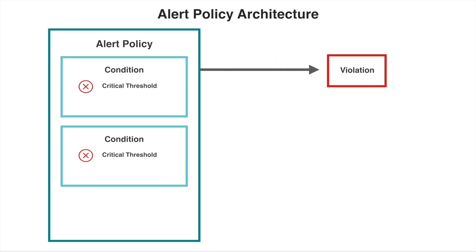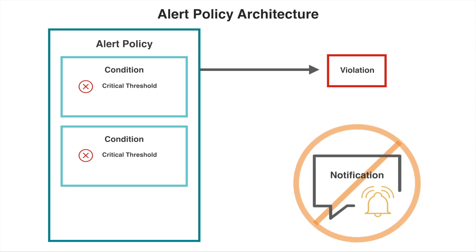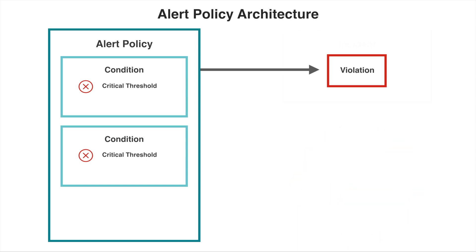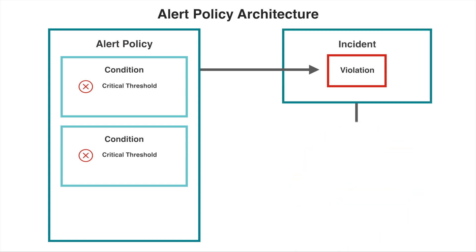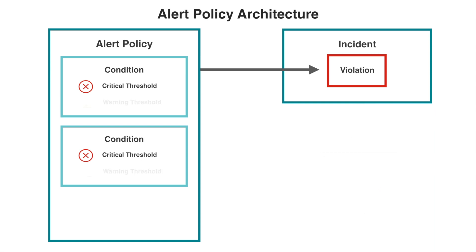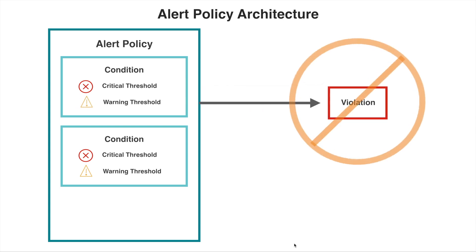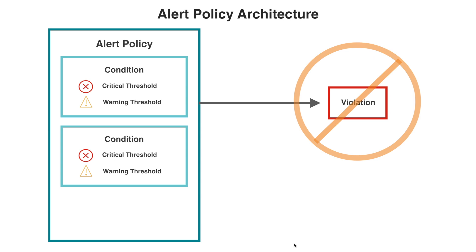A violation is a record of the threshold being crossed, but violations don't generate notifications. Instead, violations are associated with incidents, and incidents generate notifications. Each condition may also include an optional warning threshold level. Warning thresholds capture additional information you can use to analyze incidents, but violations are not opened when warning thresholds are crossed.